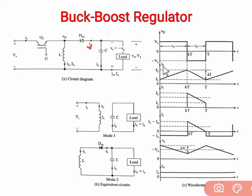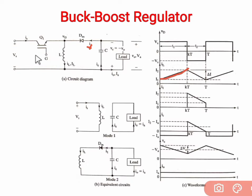The inductor current IL rises linearly from I1 to peak value I2 during mode one, reaching I2 at the end of time KT. In mode two, when the switch is turned off, the inductor current decreases linearly from I2 back toward I1. The difference between I2 and I1, known as delta I, is the ripple current in the inductor.